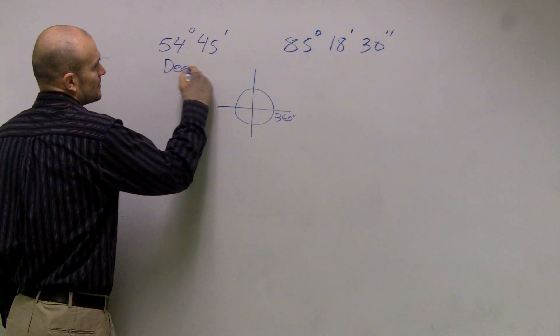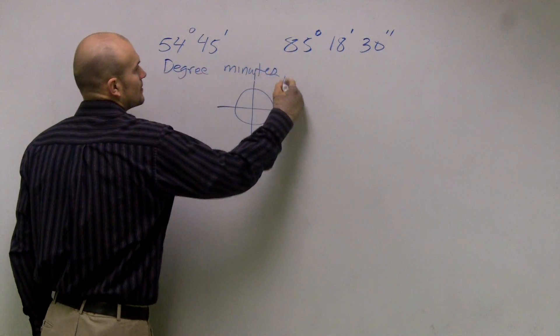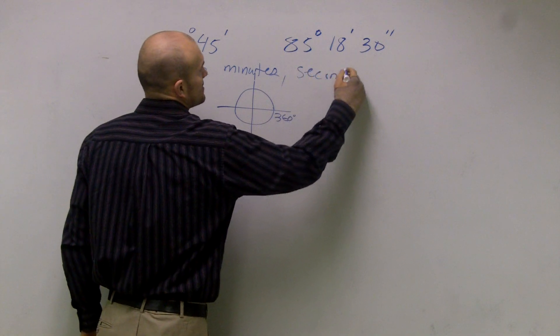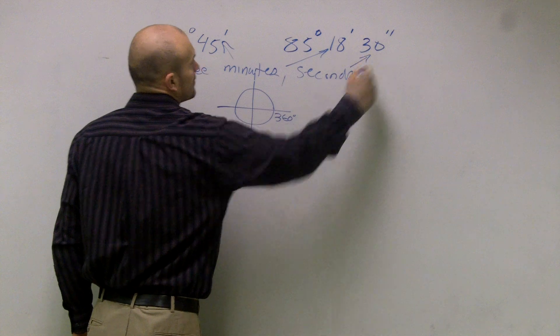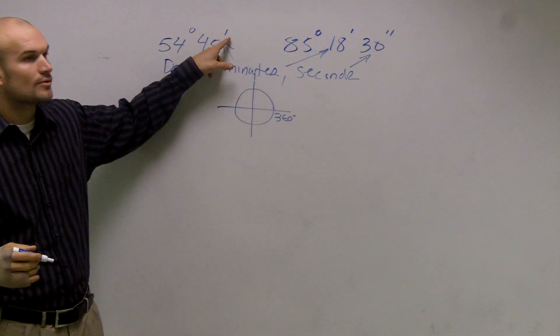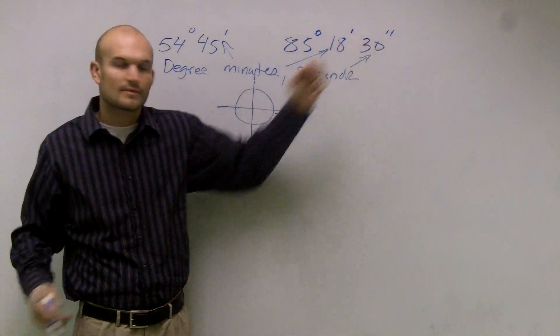What we're going to have is degrees. Then the next one is minutes and then seconds. So by minutes, we abbreviate with this one literal apostrophe. And seconds, we have the double.